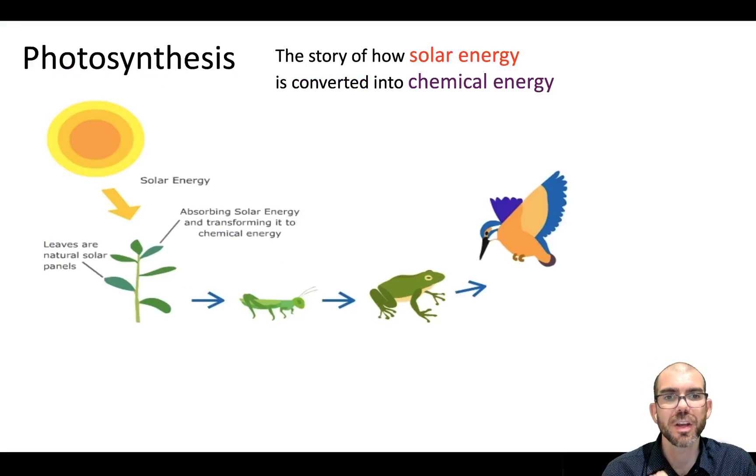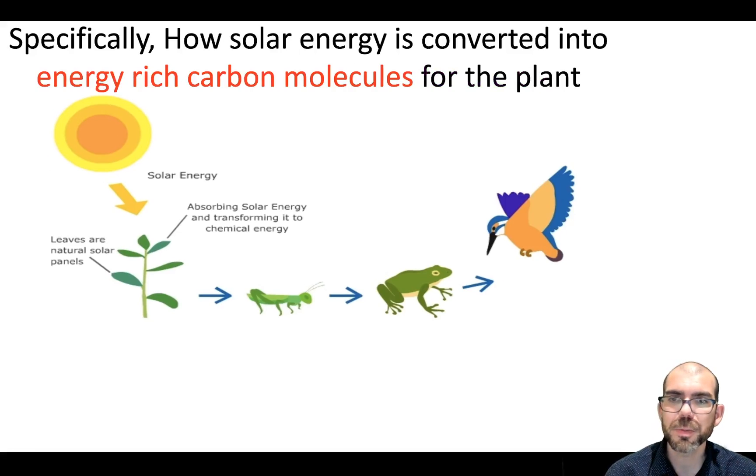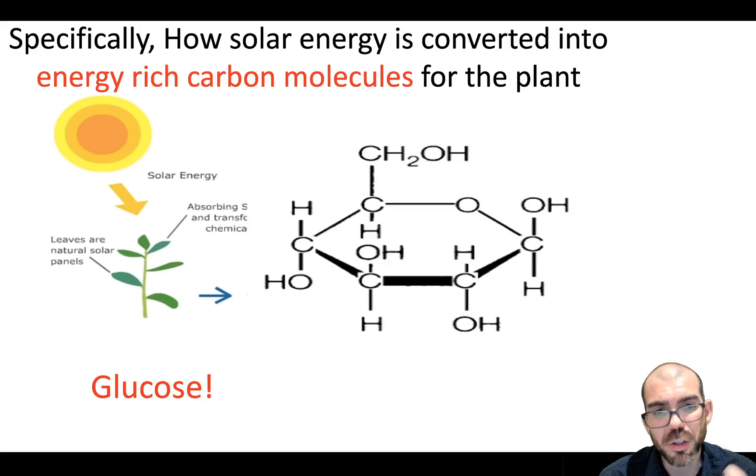When we go over photosynthesis, from a global standpoint, photosynthesis is just the story of how solar energy is converted into chemical energy within the plant, which can then progress through the food webs and food chains that make up the ecosystems we find on Earth. To be a little more specific, this is the story of how solar energy is converted into energy-rich carbon molecules such as glucose. Glucose will be the example that we use through our unit in photosynthesis.